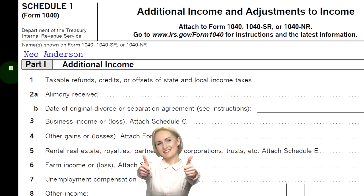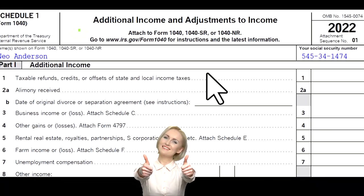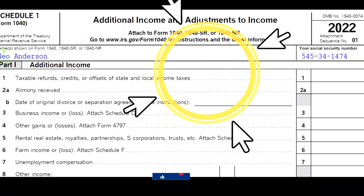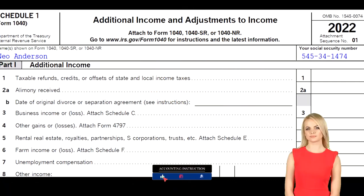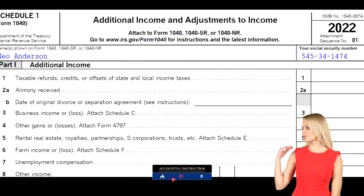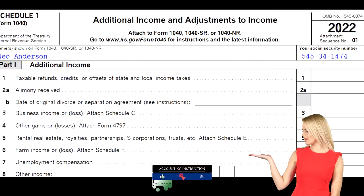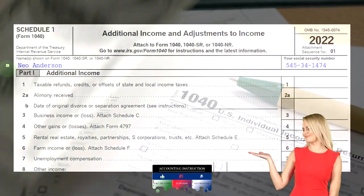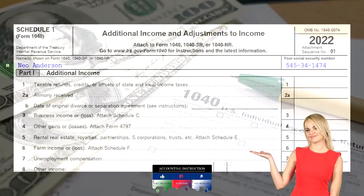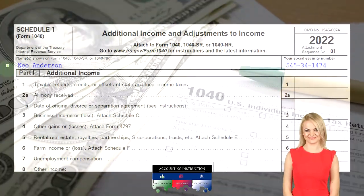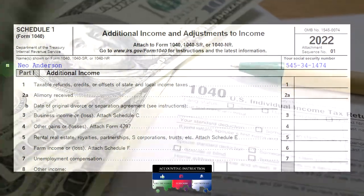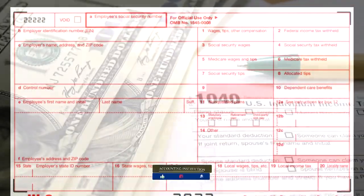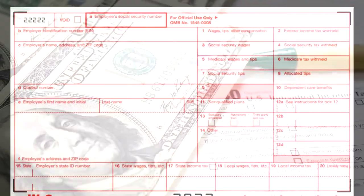This is Schedule 1, which has additional income and adjustments. We could have many other schedules that might eventually feed into the first page of Form 1040 — the income line — such as Schedule D, Schedule C, Schedule E, and so on, which we'll dive into in more depth in future presentations.